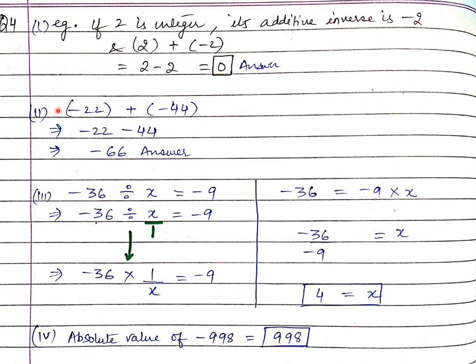The second part is: what is the sum of these two numbers? This is again a very easy question. Because you know that plus and minus will make it negative. These two will be added and the answer is minus 66.